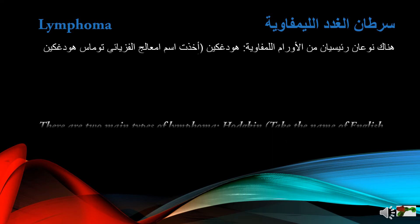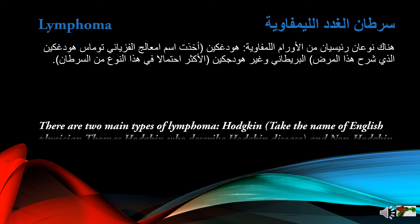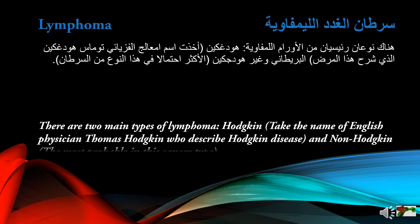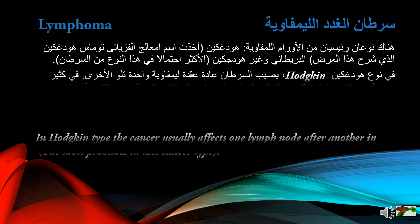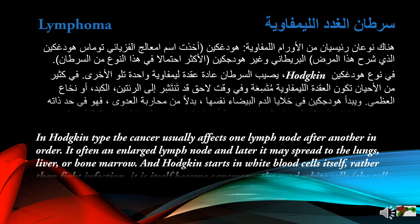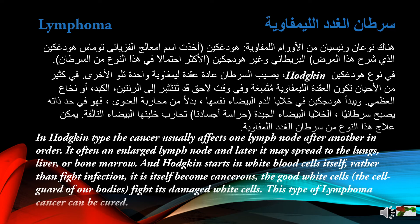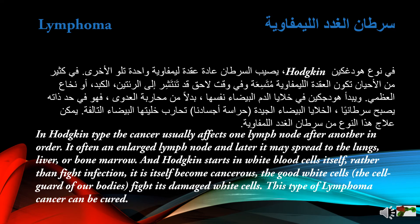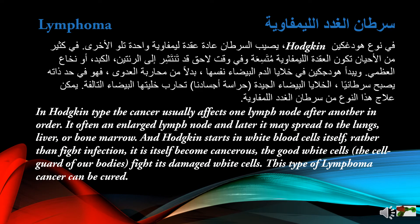There are two main types of lymphoma. Hodgkin lymphoma takes its name from English physician Thomas Hodgkin. In the Hodgkin type, the cancer usually affects one lymph node after another in order. It often begins as an enlarged lymph node and may later spread to the lungs, liver, or bone marrow. Hodgkin starts in white blood cells themselves — rather than fighting infection, the white cells become cancerous. The healthy white cells, the cell guards of our bodies, fight the damaged white cells. This type of lymphoma can be cured.